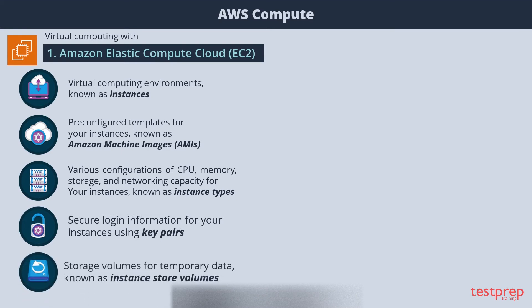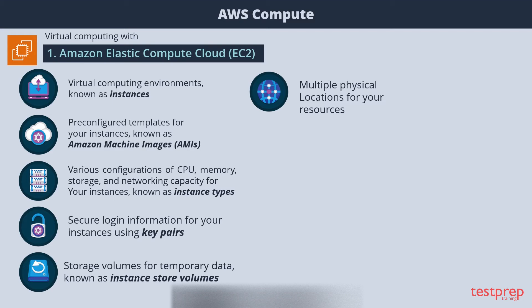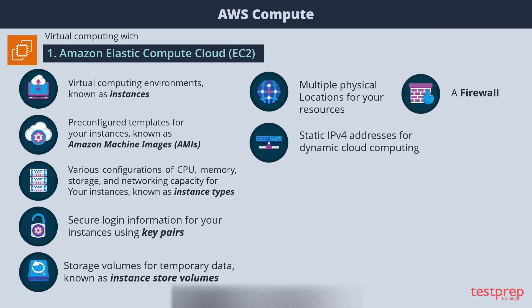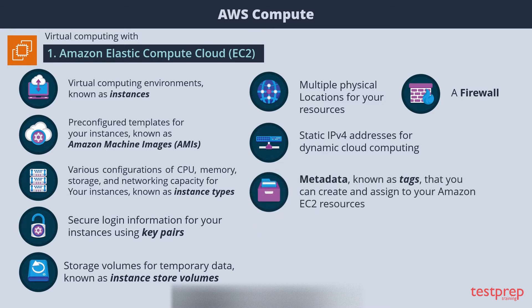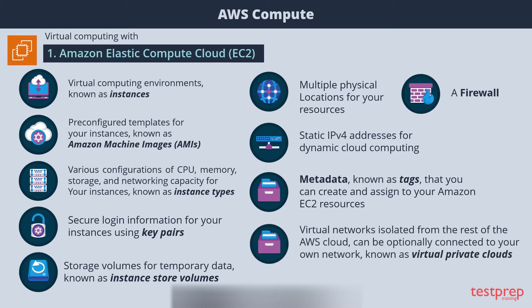You get storage volumes for temporary data known as instance store volumes. You get multiple physical locations for your resources and a secure firewall, static IPv4 addresses for dynamic cloud computing, and metadata known as tags that you can create and assign to your Amazon EC2 resources. You also get virtual networks isolated from the rest of the AWS Cloud, which can optionally be connected to your own network, known as Virtual Private Clouds.